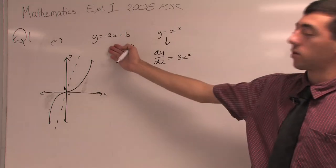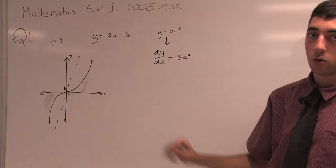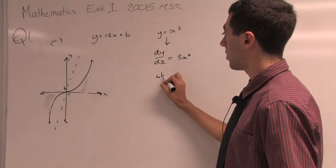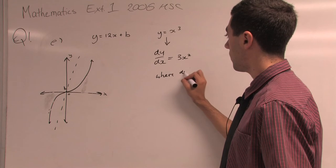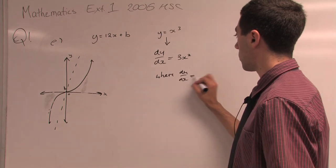Now we already know that because it's a line it has a constant gradient of 12, so we're going to find where dy/dx is equal to 12.